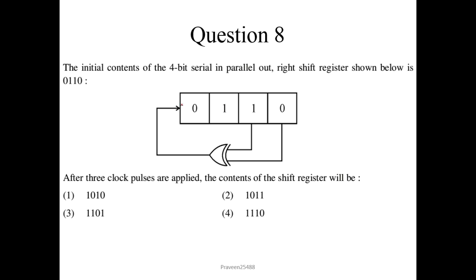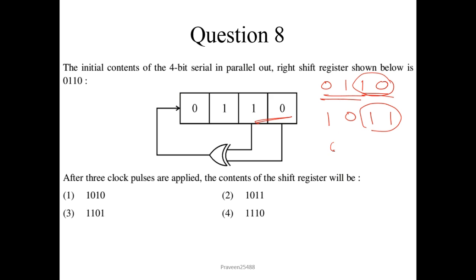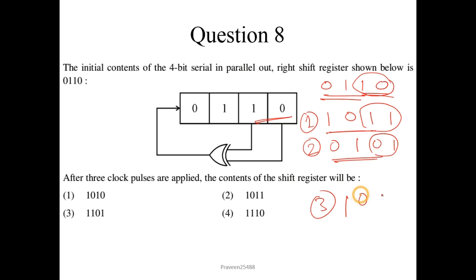Question number 8. The initial contents of the 4-bit serial-in parallel-out shift-right register is 0110. The LSB is XOR-ed and becomes the MSB. XOR of 0 and 1 is 1, and the remaining 3 bits right-shift to 011. After clock 2, XOR of 1 and 1 is 0, bits become 101. After clock 3, XOR of 0 and 1 is 1, bits become 1010. After three clock pulses, the contents are 1010. Option 1 is the correct answer.